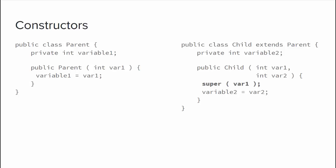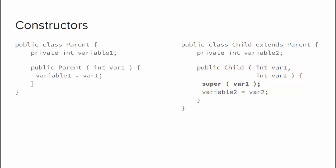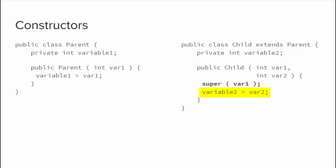This example demonstrates using the super constructor. The parent class defines one variable, variable1, and has its own constructor named Parent that takes in a value var1 to initialize variable1. Child class extends Parent, so it inherits variable1 right away. It defines a new instance variable variable2 and has a constructor named Child that takes arguments var1 and var2. The first statement in the child constructor is a call to super passing in var1, which calls the parent constructor and initializes variable1. After the super constructor call, variable2 is initialized with var2.